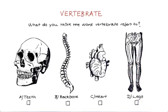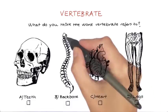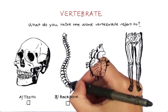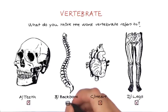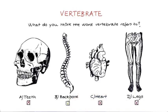The word vertebrate refers to the presence of vertebrae, or the individual bones of the backbone. Vertebrae are a line of bones that form the spine of fish, amphibians, reptiles, birds, and mammals. So B is the correct answer.